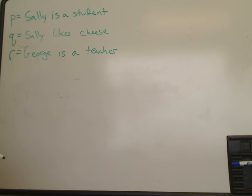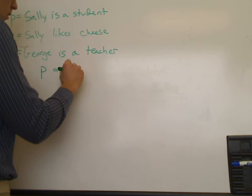Now what we can do is use these simple propositions and combine them together to create more interesting propositions. So we can say P and R. Sally is a student and George is a teacher.